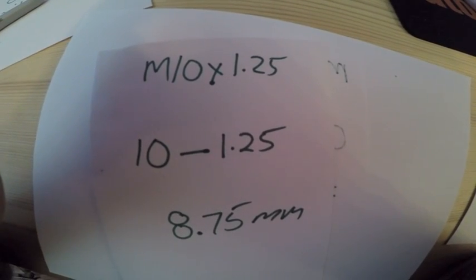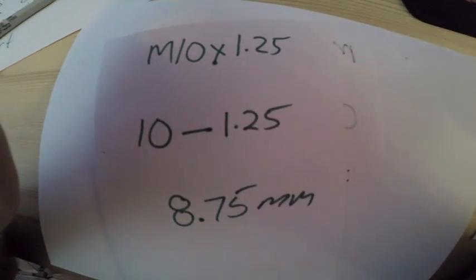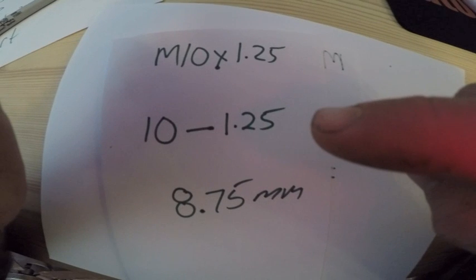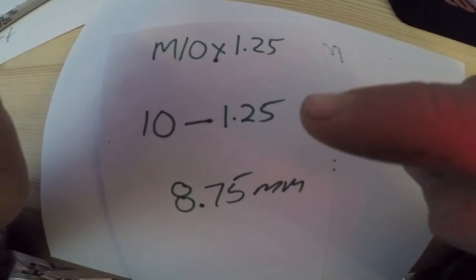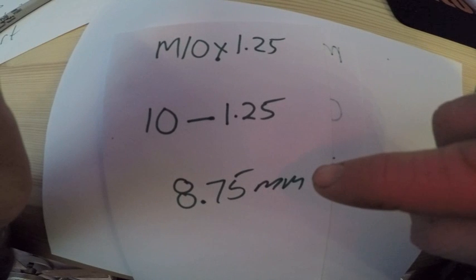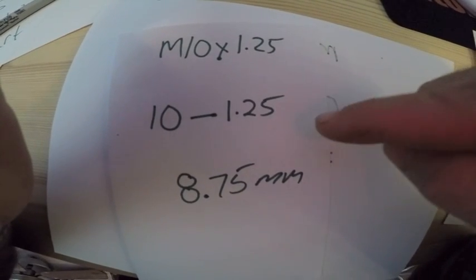All right, here's one more example for you for the metric side of it. You got an M10 by 1.25 you want to tap for. Take the 10, subtract the 1.25 off it, gives you 8.75mm. Drill that hole 8.75, run your tap in it, you're laughing, you're going to have good threads.